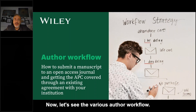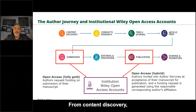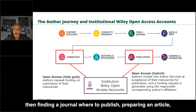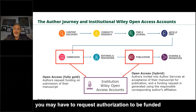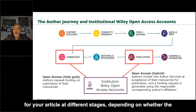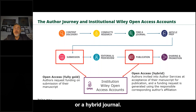Now let's see the various author workflows. This is basically a representation of the author journey from content discovery, making the research, then finding a journal where to publish, preparing an article, and then submission. You may have to request authorization to be funded for your article at different stages depending on whether the article will be published on a gold open access journal or a hybrid journal.